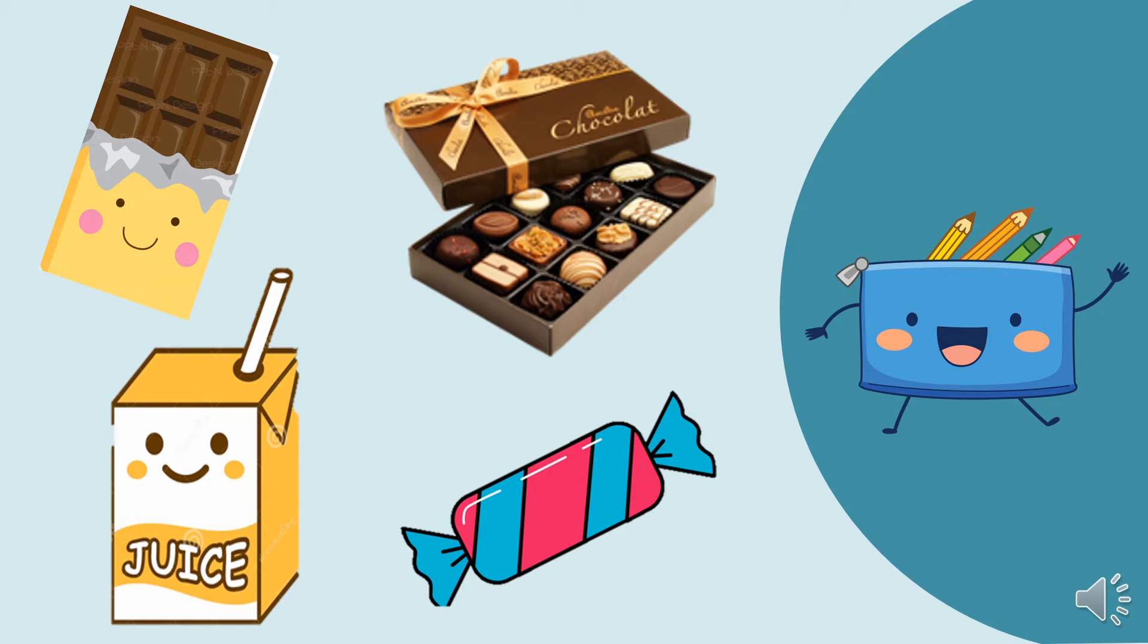Kids, here you can see one chocolate, one chocolate box, juice cover, and one toffee. These are all rectangular shape. Rectangular, okay?